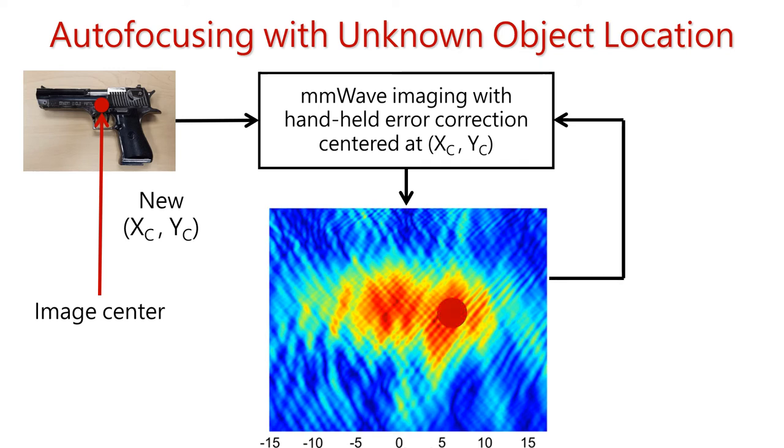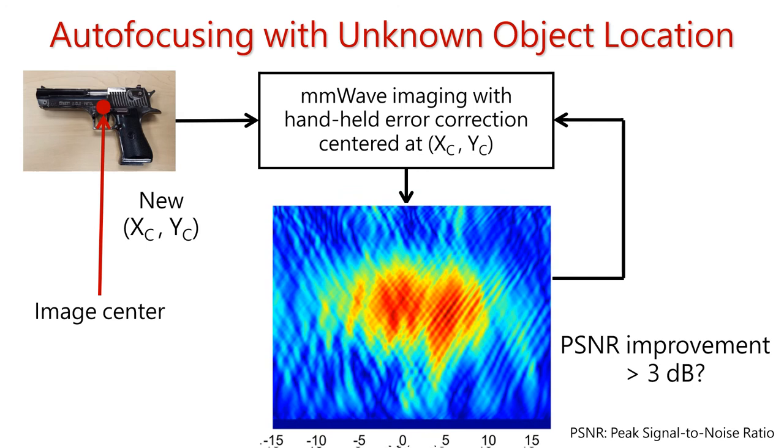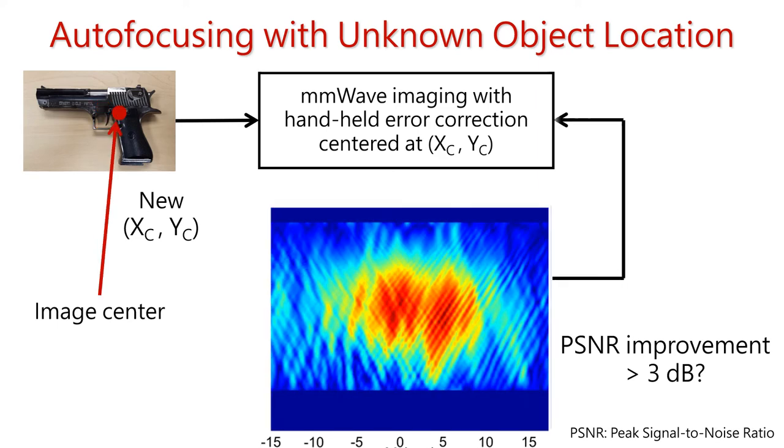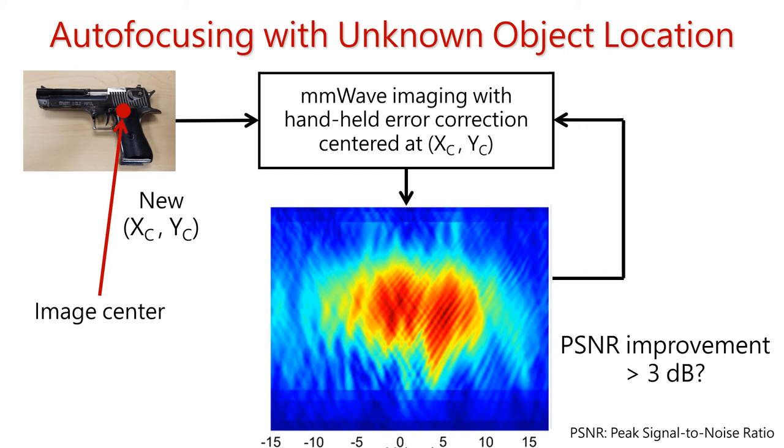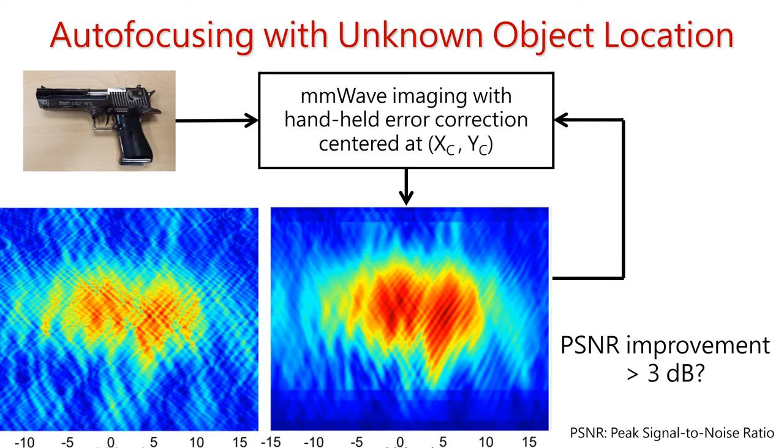This process can iterate over time to get a better image until we have a PSNR improvement of not more than 3 dB. PSNR, peak signal-to-noise ratio, is a well-known metric to understand the quality of the image. Thus, this active auto-focusing can generate a quality millimeter wave image even without knowing the object's location. Again, there are many other steps involved in this process, and I encourage you to take a look at our paper.